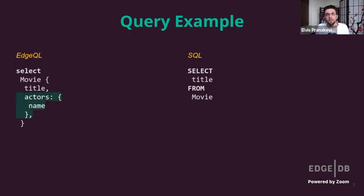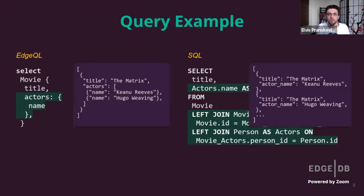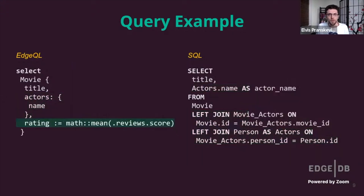Now let's expand things a little bit and fetch a list of actors for every movie. It's pretty easy to do in EdgeQL — we simply add another entry to our output shape, which is quite self-explanatory and looks a lot like GraphQL. SQL, on the other hand, is suddenly a lot more verbose because we now have to tediously specify the relationship joins. But the worst part is that SQL returns a flat list of tuples instead of a nested structure, whereas EdgeQL gives you an actual grouped result.